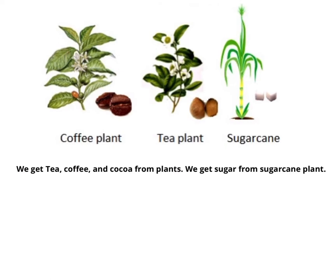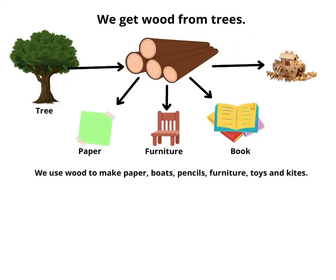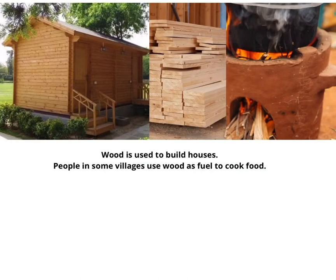We get sugar from the sugarcane plant. We get wood from trees. We use wood to make paper, boats, pencils, furniture, toys and kites. Wood is also used to build houses. People in some villages use wood as fuel to cook food.